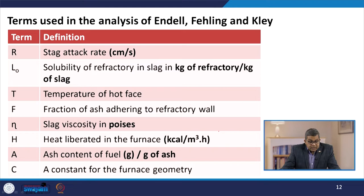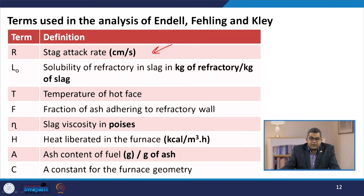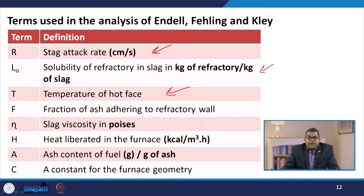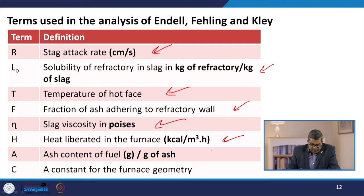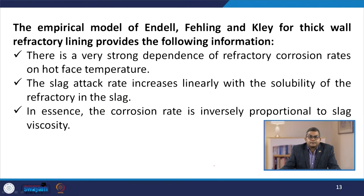In the Endel, Fehling and Klee equation: r is the slag attack rate in cm/s; l-naught is the solubility of refractory in slag in kg of refractory per kg of slag; t is the temperature of the slag or hot phase; f is the fraction of ash adhering to the refractory wall; eta is the slag viscosity in poise; h is the heat liberated in the furnace in kcal/m³/hr; a is the ash content of the fuel in g/g of ash; and c is the constant of furnace geometry.